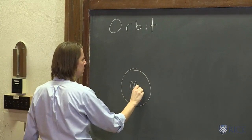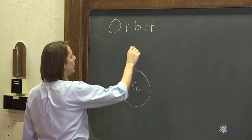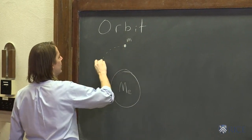Let's imagine the earth is sitting down here and we want to think about a smaller object, a little m, orbiting around the earth.